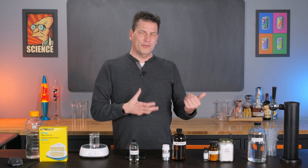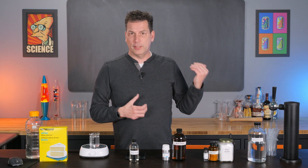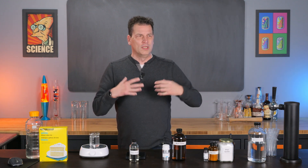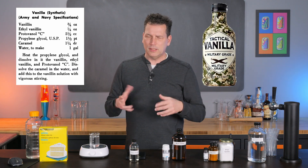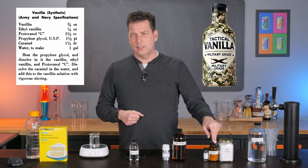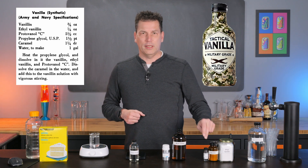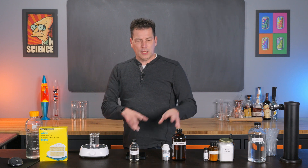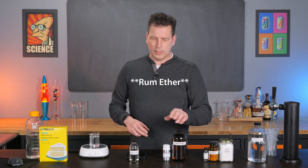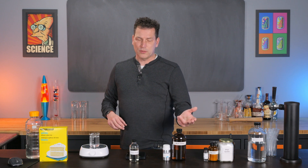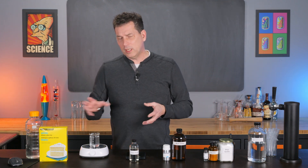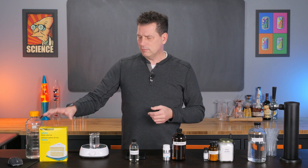In the previous video we talked about artificial vanilla extract and there was a recipe for military grade vanilla — tactical vanilla — that used ethyl vanillin, vanillin, and dihydrocoumarin. And if we just add these two ingredients, rum ether and popcorn pyrazine, also known as 2-acetyl pyrazine, we're going to end up with an actual cake flavor.